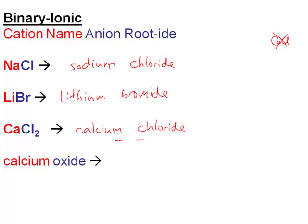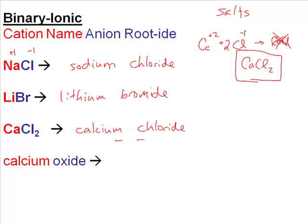You can't combine one calcium and one chlorine because it wouldn't be neutral. So instead of CaCl, it has to be CaCl2 — calcium chloride. Anytime you hear the name calcium chloride, the formula has to be CaCl2 for it to be neutral. The sodium is plus 1 and chlorine is minus 1 — that's why it's sodium chloride with no subscripts.